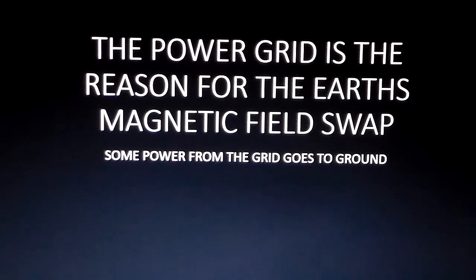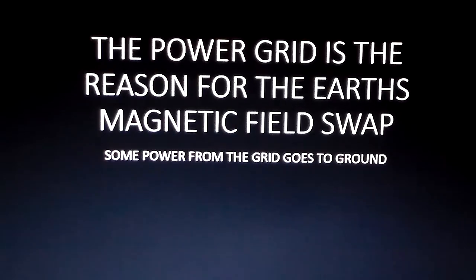All the beautiful people out there that like to have power. The power grid is the reason for the earth's magnetic field swap. Some power from the grid goes to ground. What does that mean? Well, we're going to find out in the next few minutes.